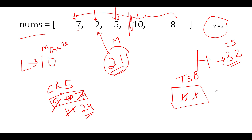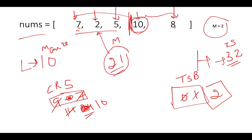Since 24 exceeds 21, we split here: total subset count increments to 2 and CRS resets to 10. Continuing, 10+8=18 which is within the limit. We finish the iteration with 2 subsets. However, 21 is not necessarily the most optimized answer — we should look for lower values that still yield 2 groups.